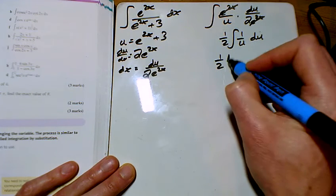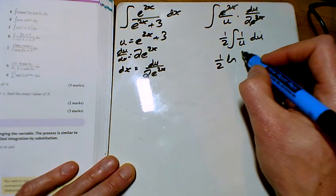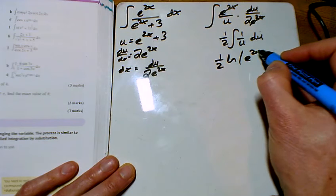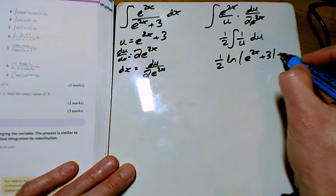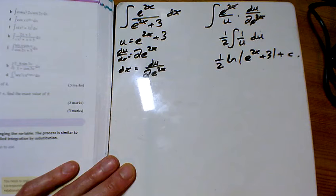Which is a half ln of u. What was u? u was e to the 2x add 3. So there's... no, that was e, sorry.